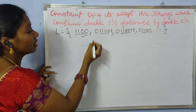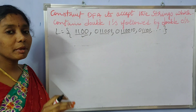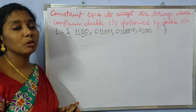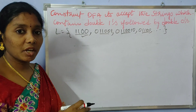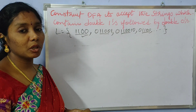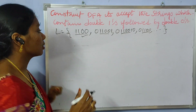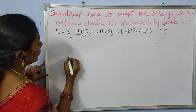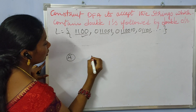What is the minimal string? The minimal string has length 4. So the minimum length is 4, and for a DFA the minimum number of states needed is 5. Here I am taking 5 states now.